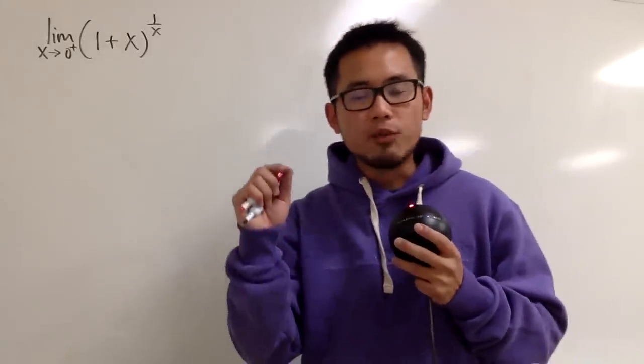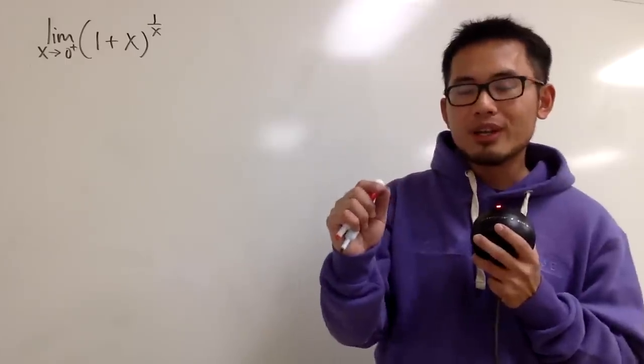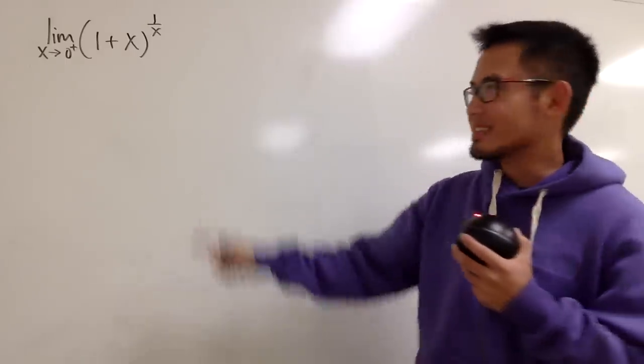Here is an example of a limit when we have the form 1 to the infinity's power, it doesn't approach to 1. Let's take a look at this.